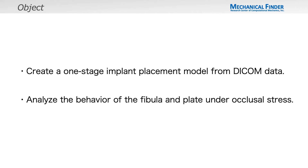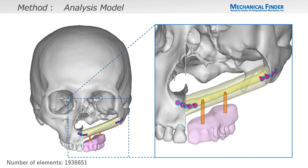The purpose of this study was to create a one-stage implant placement model from DICOM data and to analyze the behavior of the fibula and plate under occlusal stress. The patient is a 31-year-old male. The left maxilla was completely ablated and the left fibula was placed. A titanium plate for facial bone, one for each junction, was used to secure the fibula to the maxilla and zygomatic bone. Two dental implants were placed in line with the dentition and connected to the overdenture.